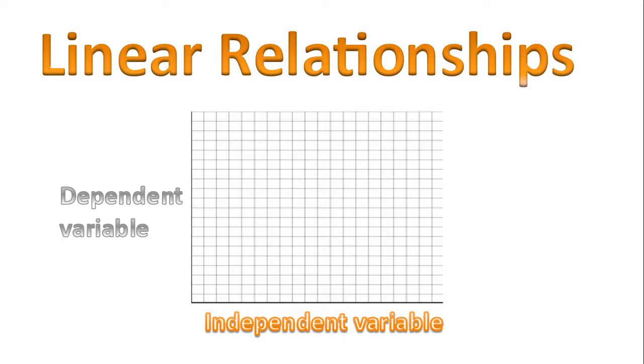Whenever we consider a graph we need to consider what our independent variable will be and our dependent variable. The independent variable is always graphed along the x-axis and the dependent variable is always graphed along the y-axis.